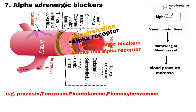Number 7 is Alpha Adrenergic Blockers. Alpha receptors are found in most vascular smooth muscle. Noradrenaline binds with this receptor and reduces the blood vessel diameter, hence increasing blood pressure. So alpha adrenergic receptor blockers block this receptor and reduce blood pressure. Examples of alpha adrenergic blockers are Prazosin, Terazosin, Phentolamine and Phenoxybenzamine.